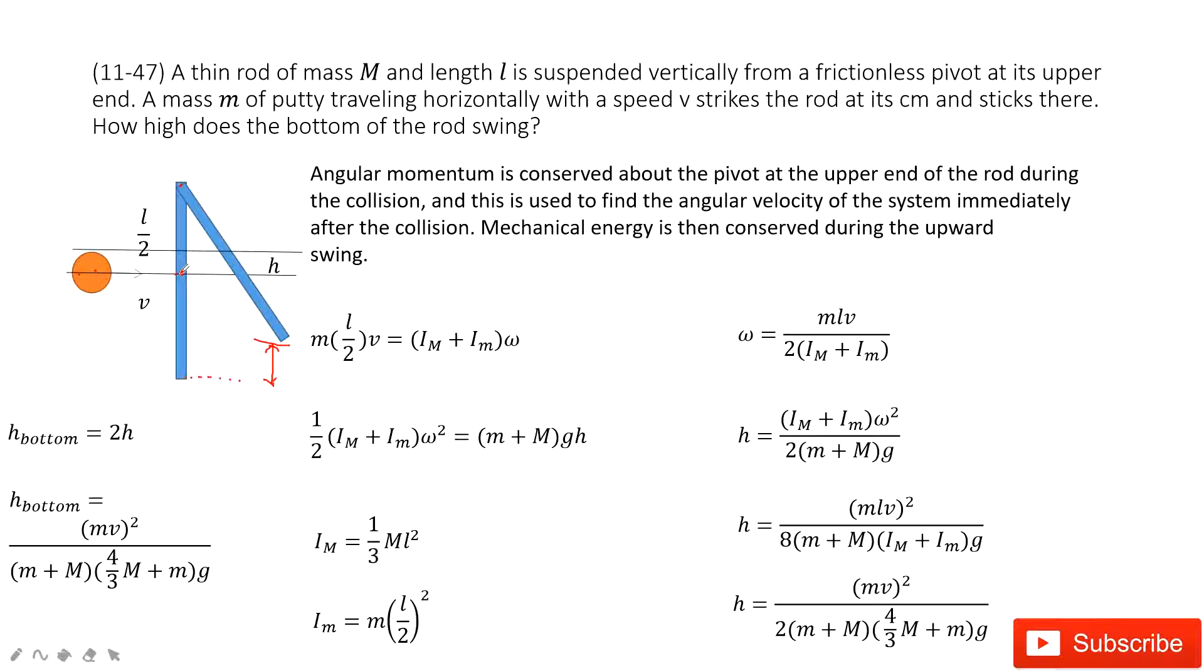The initial angular momentum is just from the object, small m times the distance l divided by 2 times v. This is r cross p, where r is l/2 and mv is p. The angle is 90 degrees. This is the initial angular momentum.